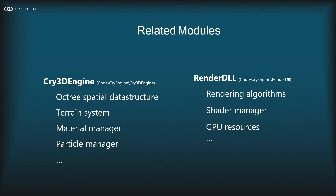The rendering code lives mostly in two modules: the 3D engine and the render DLL. The 3D engine code can be found in Code/CryEngine/Cry3DEngine, and the rendering code in Code/CryEngine/RenderDLL. We build those into DLLs loaded at runtime. We actually build five versions of this for each platform — CryRenderD3D11, CryRenderD3D12, and so on.